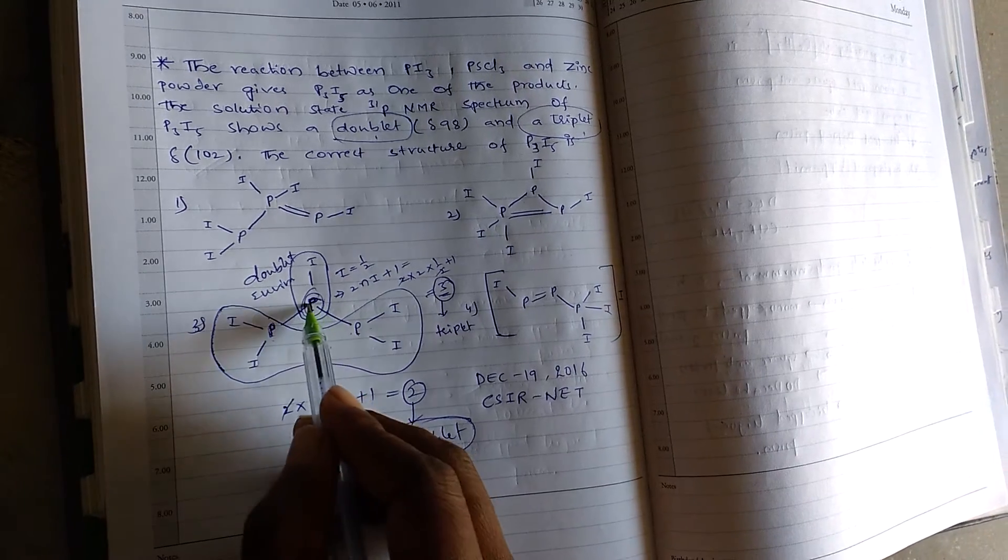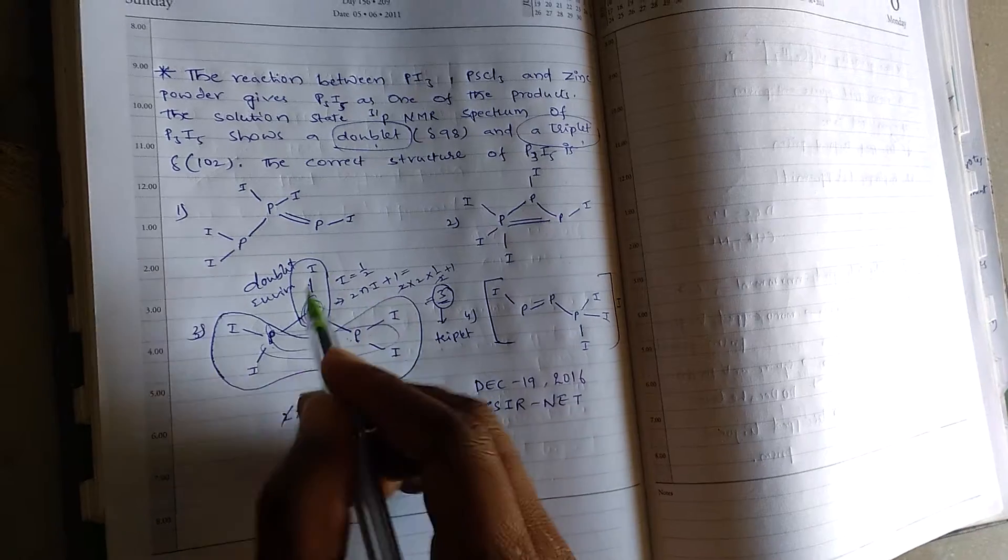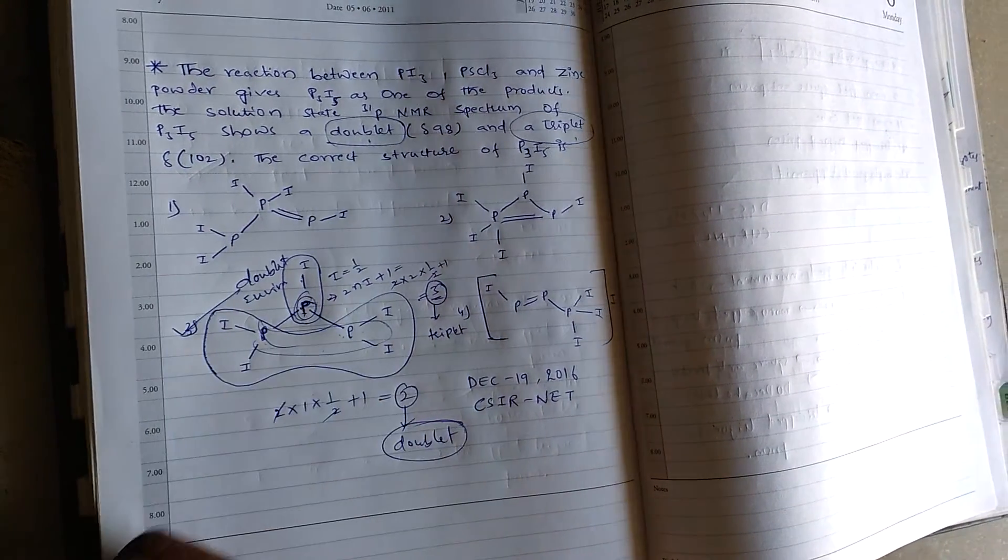So this phosphorus is in triplet state and these two phosphorus is in doublet state. That's why third option is correct one.